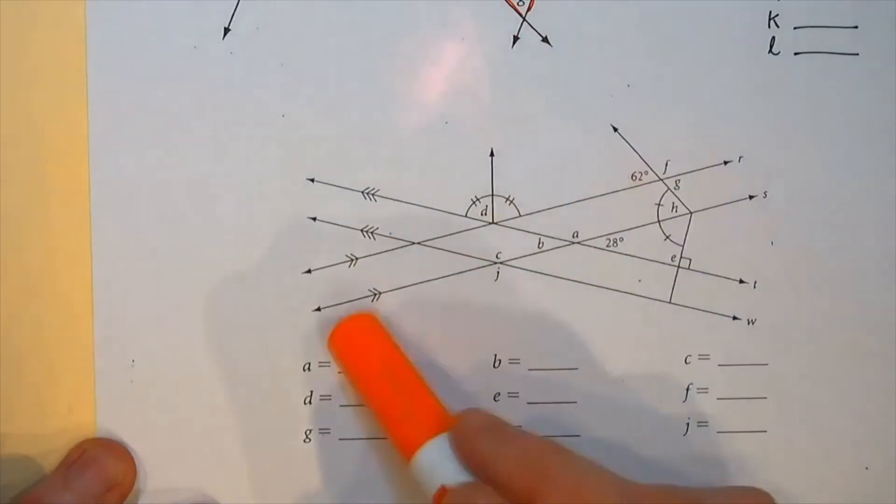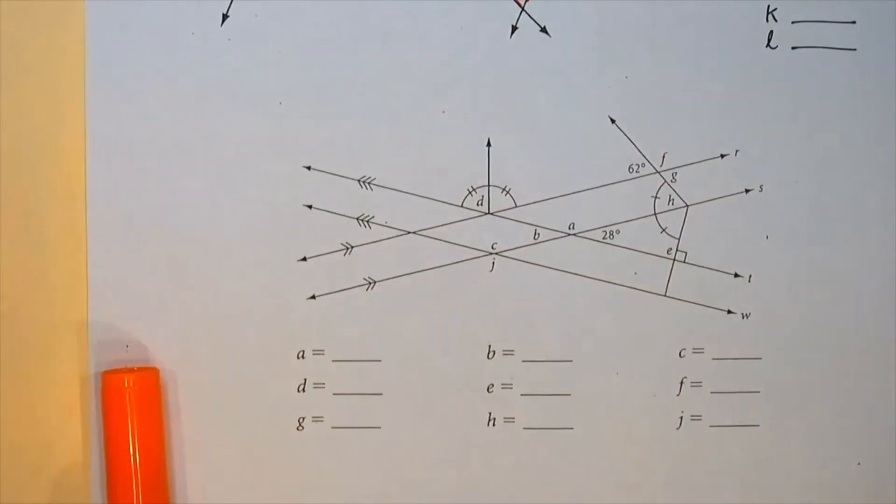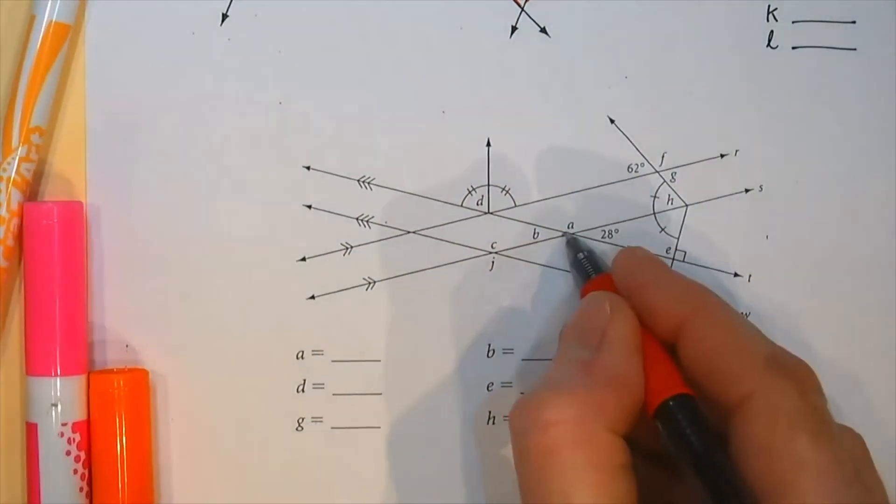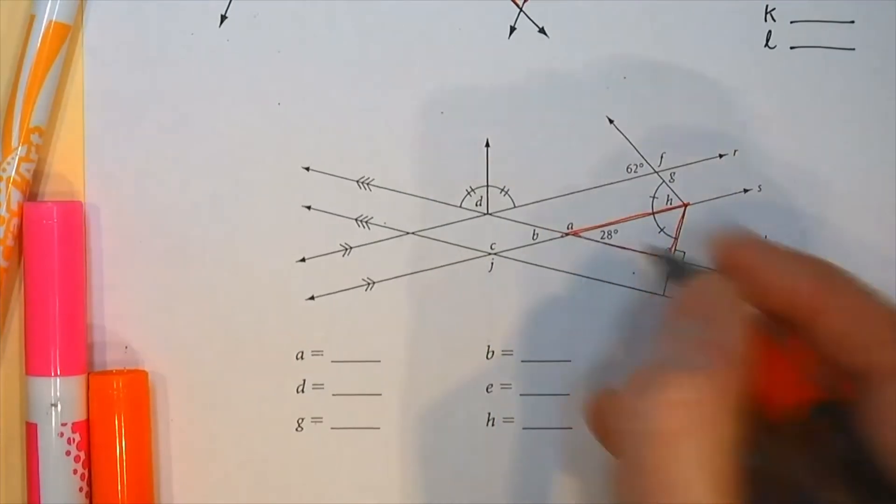Here's another one. Notice all the parallel lines. Look for Z's. Once again, there could be, maybe you could fill out this triangle.